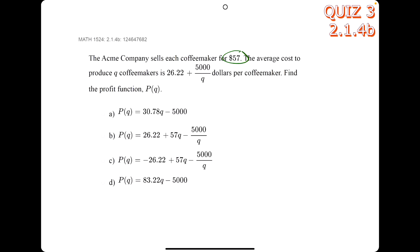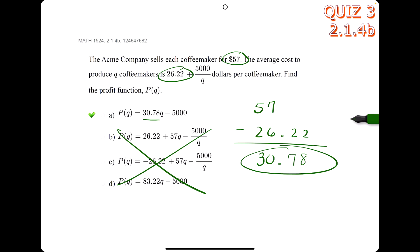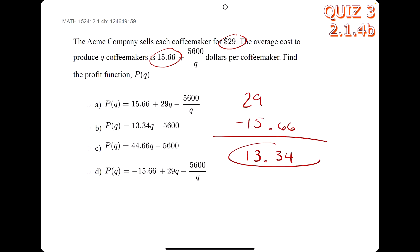In this problem, we take this value and subtract this value. Once we do that, we get 30.78, which shows up in none of the answers except for option a, so a is our answer. Likewise, in this one we take this value minus this value, we get 13.34, and that shows up in none of the answers except for option b, so b is our answer.